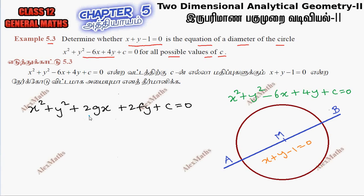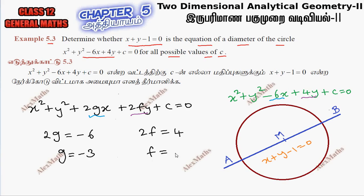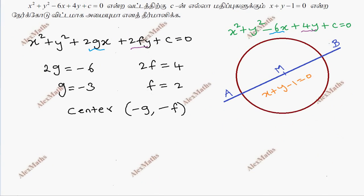If we compare: 2g is equal to minus 6, so g is equal to minus 3. And 2f is equal to 4, so f is equal to 2. The center is equal to minus g, minus f — that is the formula. So minus g is 3, and minus f is minus 2. This is the center: (3, minus 2).